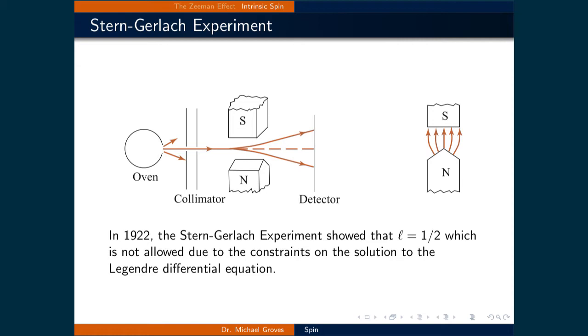Half of the silver atoms bent up, and the other half bent down. This showed that the total angular momentum of these particles was equal to one-half. This was not allowed due to constraints on the solution to the Legendre differential equations that said that L must be equal to an integer.